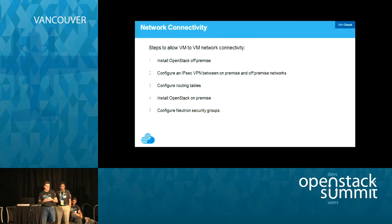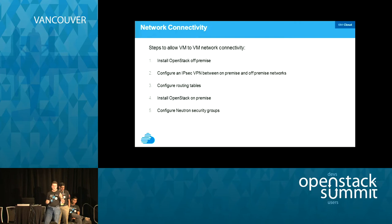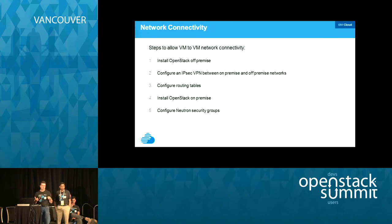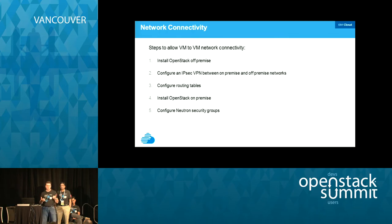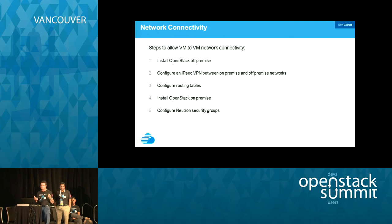There are five steps to get this set up: install OpenStack on the off-premise; configure the VPN on on-premise and off-premise so they can communicate; set up the network routing tables and configuration; install OpenStack on the on-premise; and configure Neutron Security Groups, because by default they will block incoming traffic. We won't talk about steps one or four here — we'll focus on items two, three, and five.